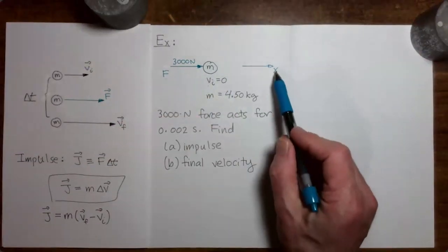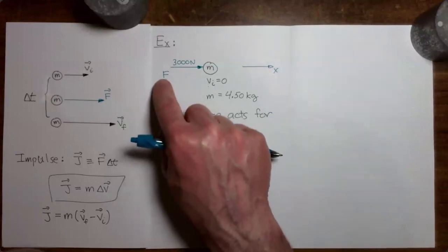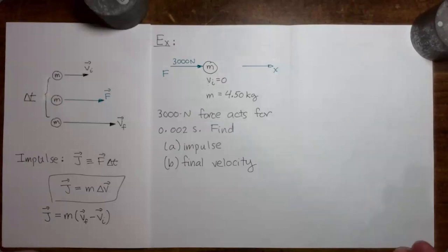And because everything is happening now along the x-axis, we can just think of the force as a signed scalar, either positive or negative. And then that positive or negative keeps track of the direction for us. So let's go ahead and do the calculation now.